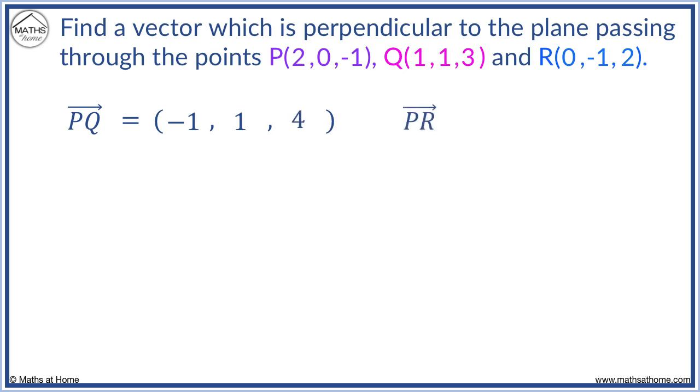PR is found by subtracting P from R. 0 minus 2 equals -2. -1 minus 0 equals -1. 2 minus -1 equals 3.